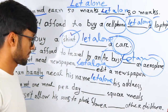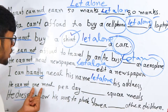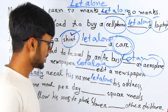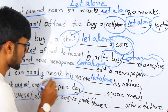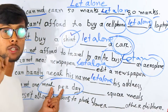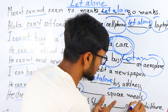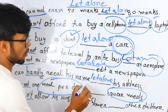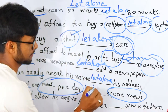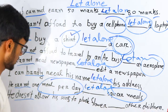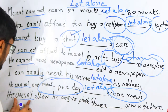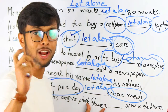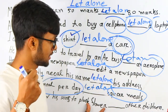Next example: 'I cannot manage one meal per day, let alone a full meal.' One meal per day is easy, but managing a full proper meal is much harder. At this moment you use 'let alone.'